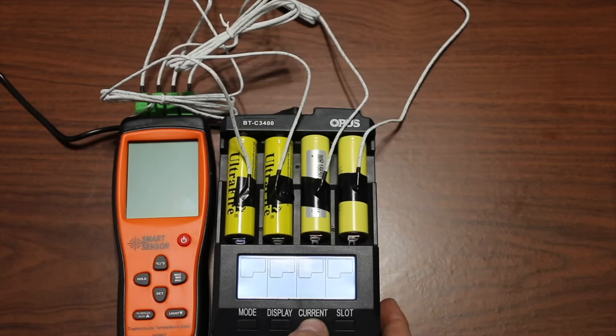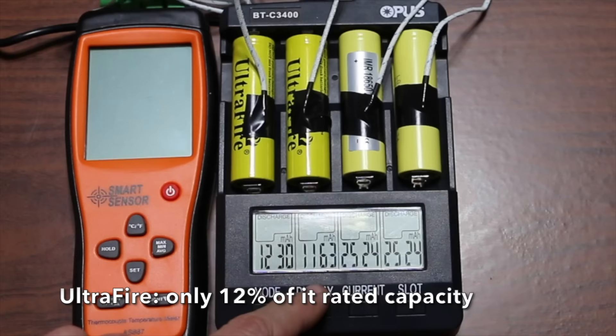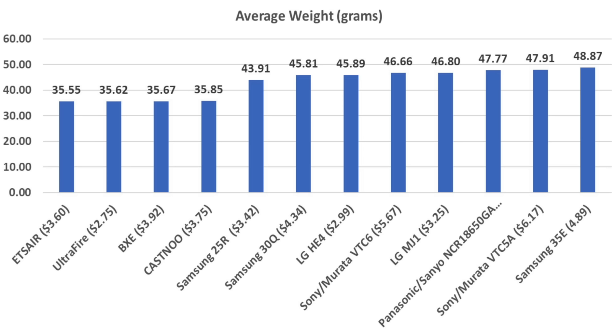I then used a battery tester to measure the actual capacity of the batteries. The two UltraFire batteries that I tested are supposed to make 9,800 milliamp hours. They only had a capacity of 1,230 and 1,163. Looking at actual weight, the UltraFire batteries were very light compared to the brand names like the Samsung, LG, Sony, and Panasonic.